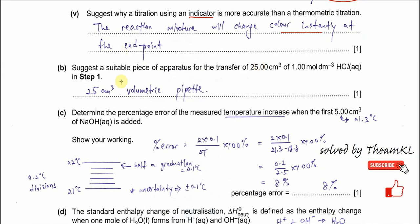Part b: suggest a suitable piece of apparatus to transfer 25 cm³ of 1 mol/dm³ HCl in step one. The key here is to be specific — you should state volumetric pipette, not just pipette, as pipette alone is too general. So write '25 cm³ volumetric pipette.'